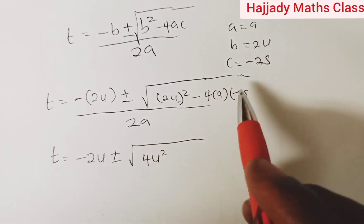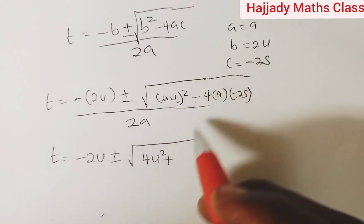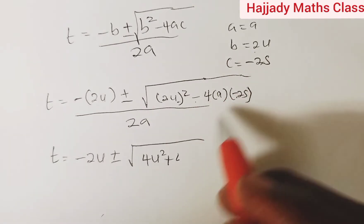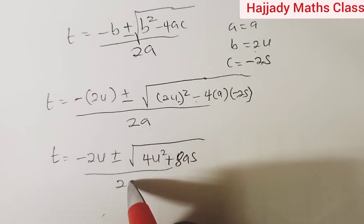Minus times minus, or negative sign times negative gives positive, 4 times 2 gives 8as. We have everything over 2a.